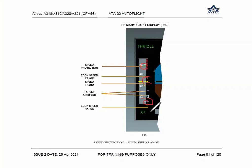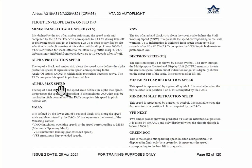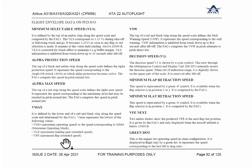The Mach number is displayed here and is only available when the value is more than 0.5; below that it will not be shown — minimum 0.50 is required for display. You will also see alpha protection speed, alpha max speed, VMO maximum operating speed, and the speed corresponding to MMO maximum Mach operating speed. Standard values written on the main instrument panel include VMO, MMO, VLE, and VFE. VLE is the maximum landing gear extended speed and VFE is the maximum flap extended speed.